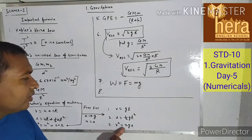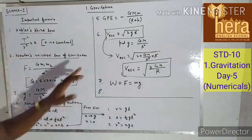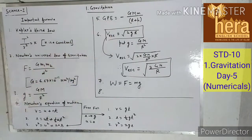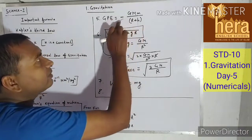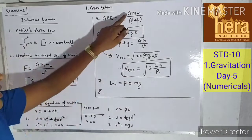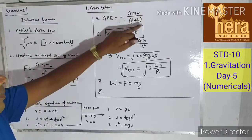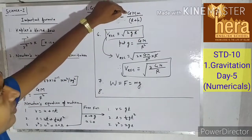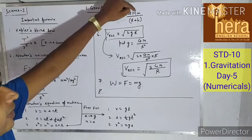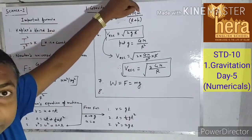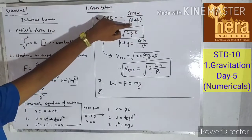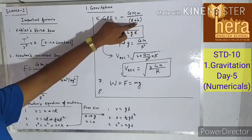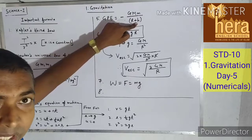The fifth formula is gravitational potential energy (GPE): GPE = −GMm/(R + h), where G is the universal gravitational constant, M is the mass of the planet, m is the mass of the object, R is the radius of the planet, and h is the height from the surface of the planet.